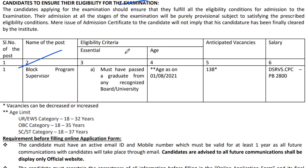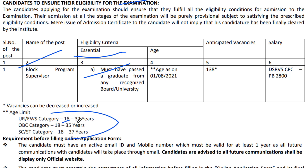The name of the post is Block Program Supervisor. You should have a graduate degree — any branch — so any graduate can apply for this job. The minimum age limit is 18 years for the General category, maximum 32; for OBC, minimum 18 and maximum 35.